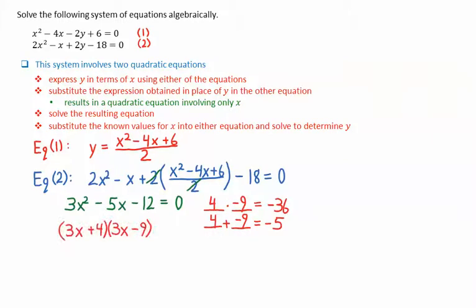We then write the factors as 3x plus 4 and 3x minus 9. Note, though, that the 3x minus 9 can be divided by 3. We then get the result 3x plus 4 times x minus 3 equals 0. This gives resulting x values of negative 4 over 3 and 3.